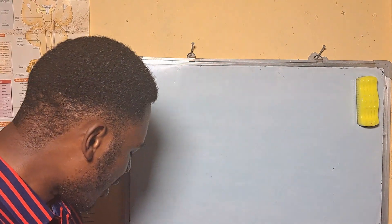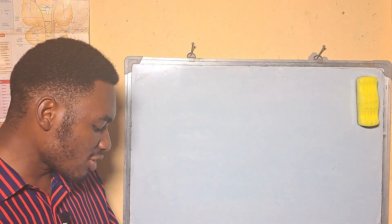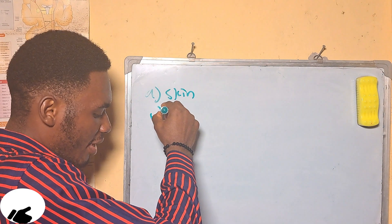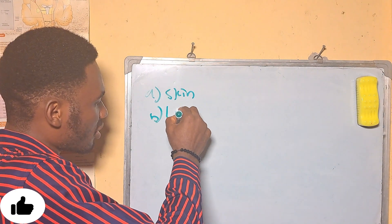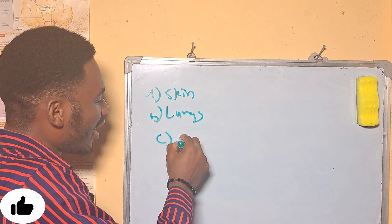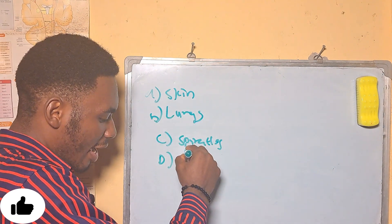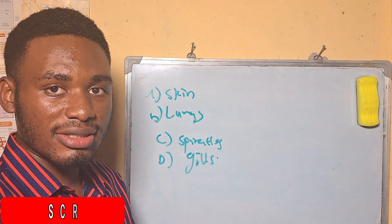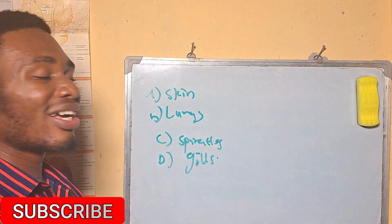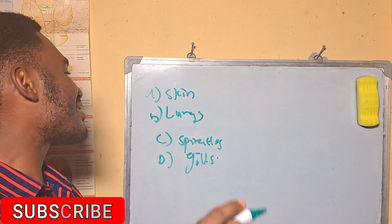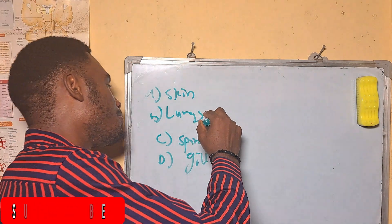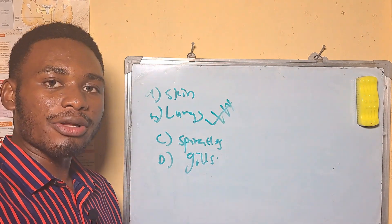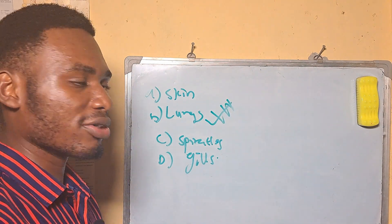The main respiratory organ of whales is — A: skin, B: lungs, C: spiracles, D: gills. Whales live in water, but one important thing to know is that whales are mammals. Our answer is B, lungs, because mammals respire through the lungs.